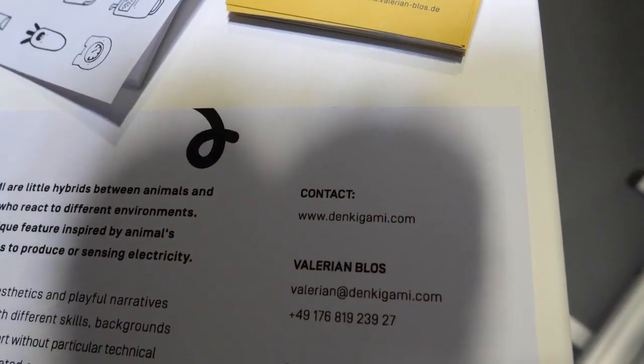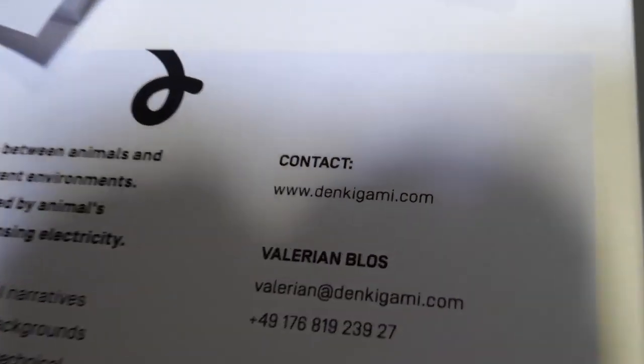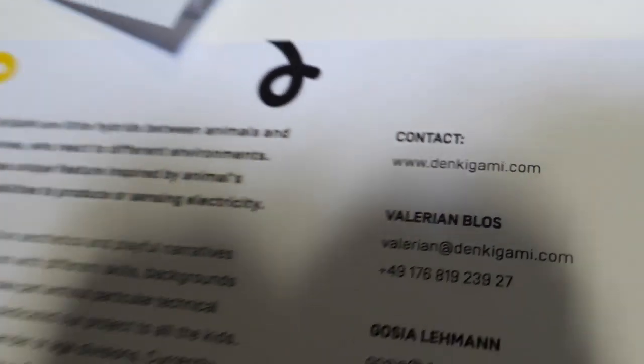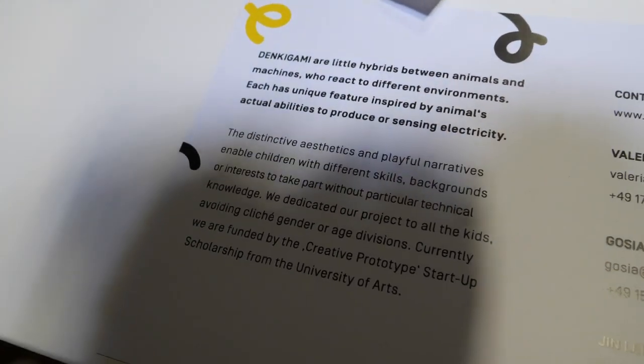All right, cool. So there you have it. People can find you right here. Denkigami. What's the idea about this name? Denkigami is Japanese for electronic paper. You know origami? Yeah, it's foldable paper and Denki is electronic.